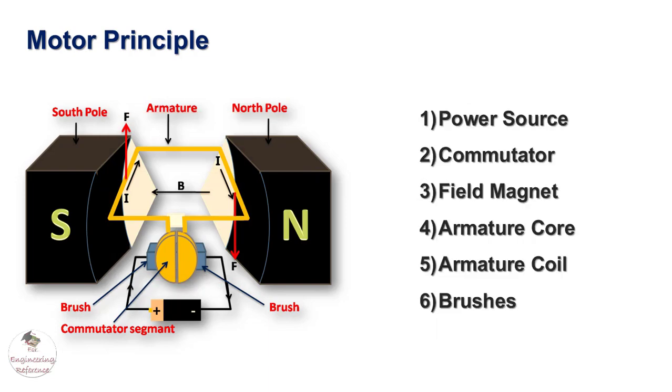Other than the armature, there are different parts of an electric motor. They are power source. A simple motor usually has a DC power source. It supplies power to the motor armature or field coils.